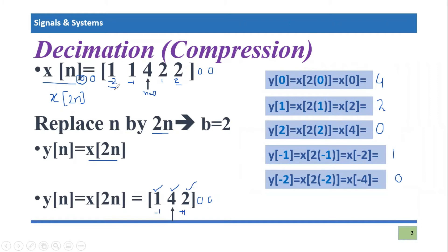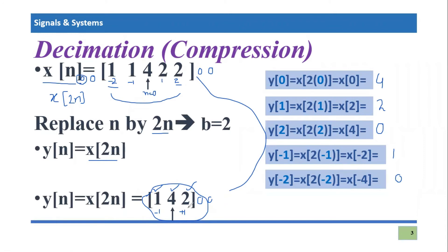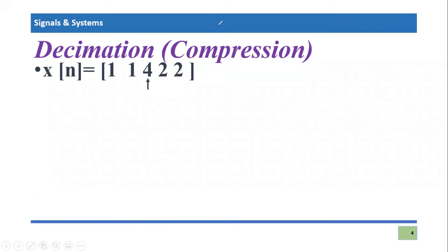You can see the vector is defined from minus one to plus one, while the original signal was defined from minus two to two. So this signal is a compressed or decimated version of the original signal x(n), since it was defined from minus two to two and now it is just defined from minus one to one.